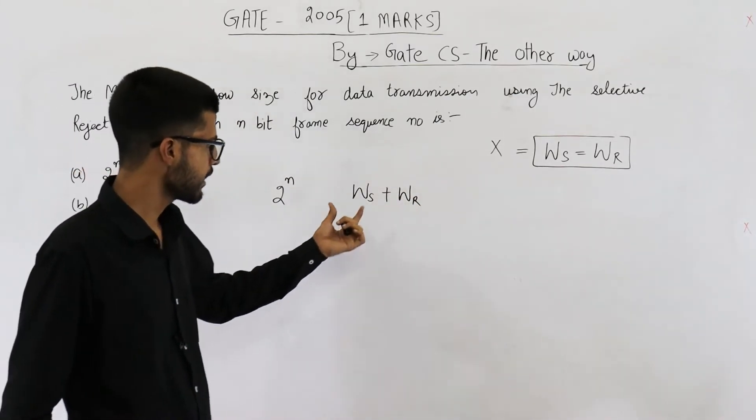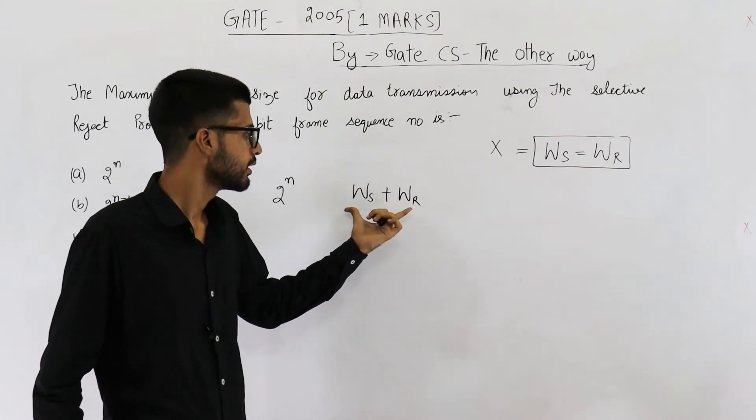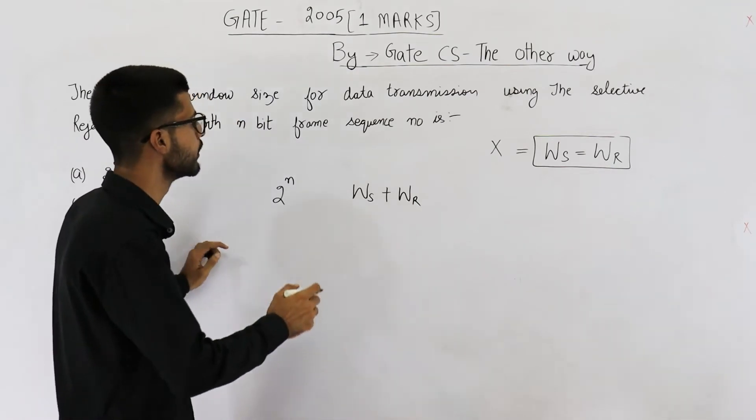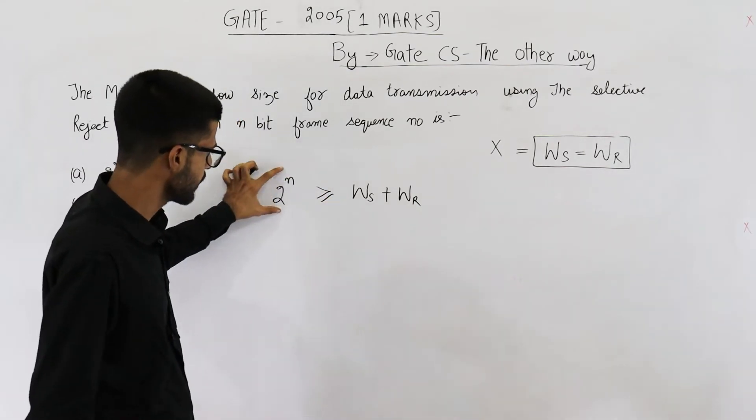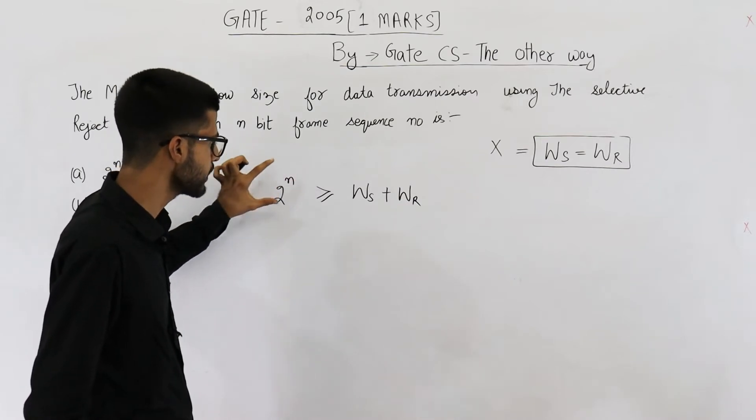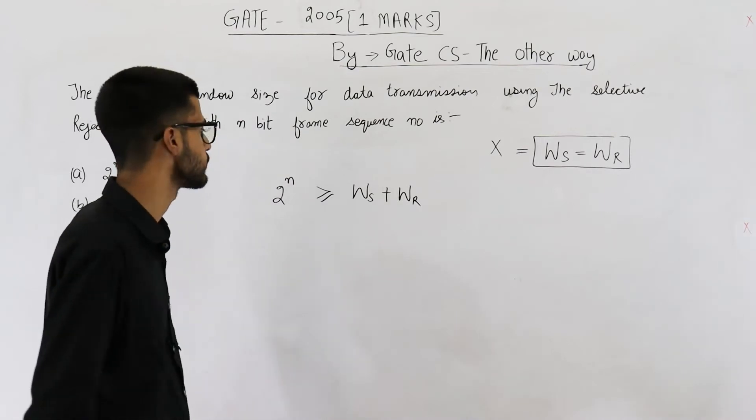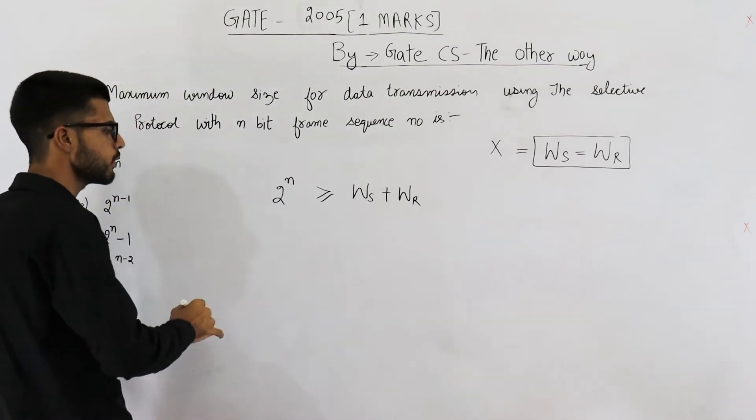See you add window size of sender and window size of receiver. Minimum these many sequence numbers must be there. So the relation is the available sequence numbers must be greater than or equal to sender window size plus receiver window size. We'll just take a numerical example and I'll show it to you. For now concentrate here.